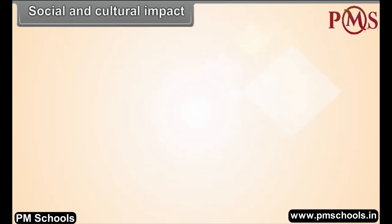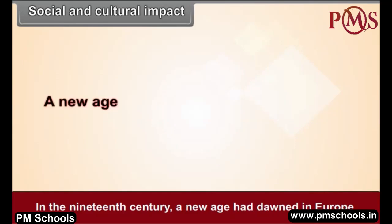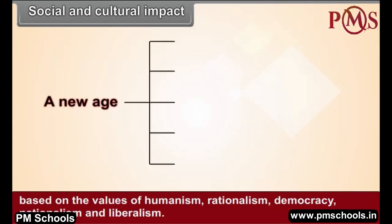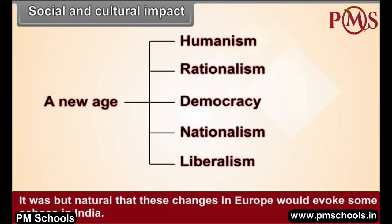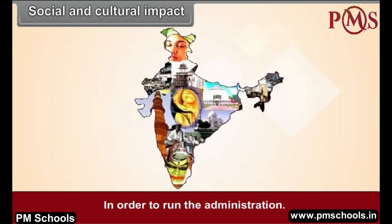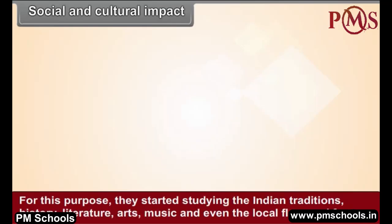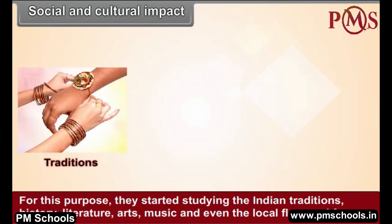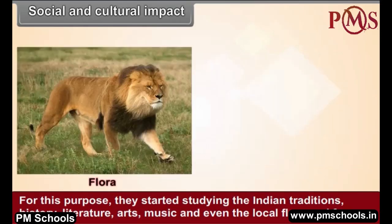In the 19th century, a new age had dawned in Europe based on the values of humanism, rationalism, democracy, nationalism, and liberalism. These changes in Europe evoked echoes in India. In order to run the administration, the British wanted to get acquainted with Indian society, and began studying Indian traditions, history, literature, arts, music, and even the local flora and fauna.